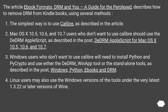The article 'eBook Formats, DRM and You: A Guide for the Perplexed' describes how to remove DRM from Kindle books using several methods. The simplest way is to use Calibre, as described in the article. Mac OS X 10.5, 10.6, and 10.7 users who don't want to use Calibre should use the DRM Apple script, as described in the post 'DRM Apple Script for Mac OS X 10.5, 10.6, and 10.7'.